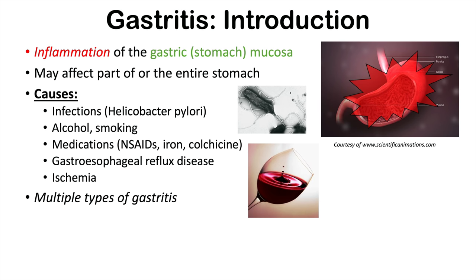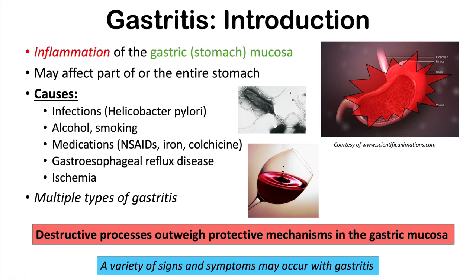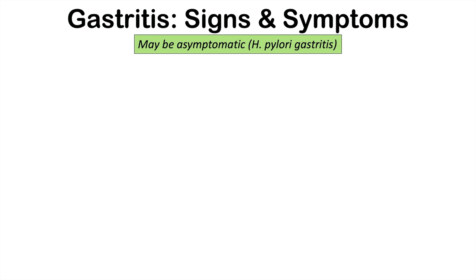Although there are many causes, they all have something in common: they all lead to increased destructive processes that outweigh protective mechanisms within the gastric mucosa. In the lining of the stomach, there are natural protective mechanisms against damage. However, a lot of these causes either deplete those protective mechanisms or increase destructive processes that outweigh them. It's also important to note that gastritis may be asymptomatic — in fact, a lot of patients may have inflammation of their stomach and not even know it. This can be particularly found in cases of H. pylori gastritis, where that infection can lead to inflammation of the stomach without the patient even knowing.